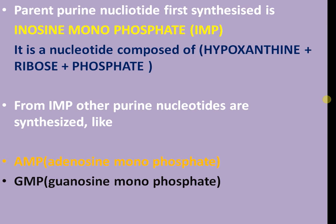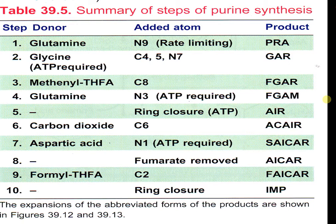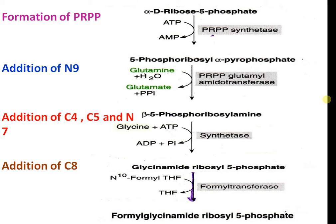The parent purine nucleotide is inosine monophosphate (IMP), which is a nucleotide composed of hypoxanthine plus ribose combined with phosphate. From IMP, other purine nucleotides — adenosine monophosphate and guanosine monophosphate — are synthesized. The steps include formation of PRPP, addition of N9, addition of C4, C5, and addition of C8 involving formyl transferase and PRPP synthetase.